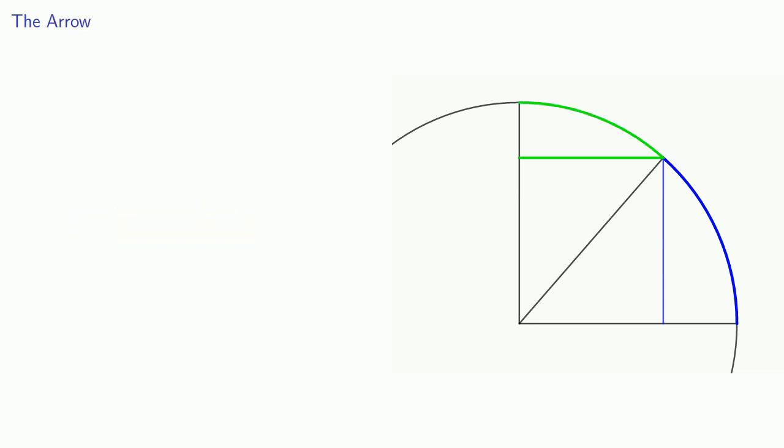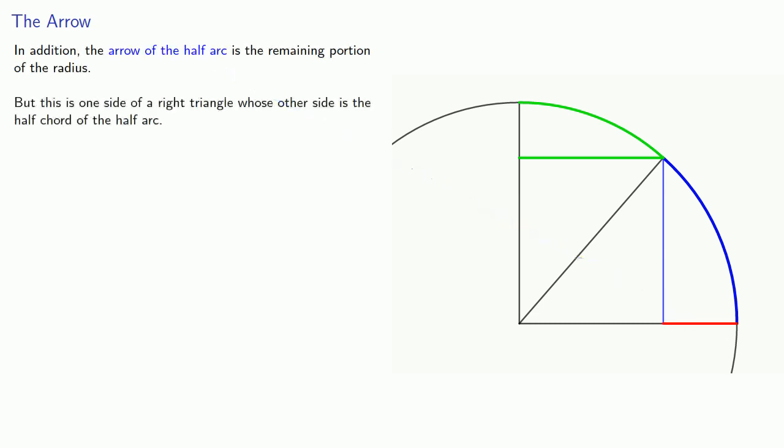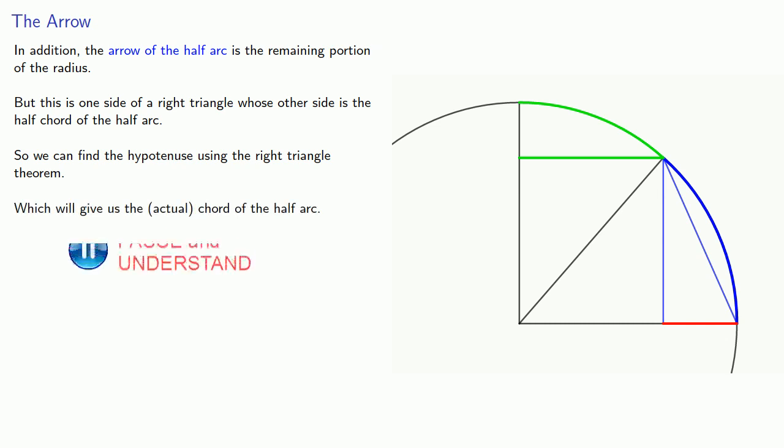There's one other important quantity here. The arrow of the half-arc is the remaining portion of the radius. But again, this is one side of a right triangle whose other side is the half-chord of the half-arc. So we can find the hypotenuse, again, using the right triangle theorem, which gives us the actual chord of the half-arc, and half of that is the half-chord of the quarter arc.